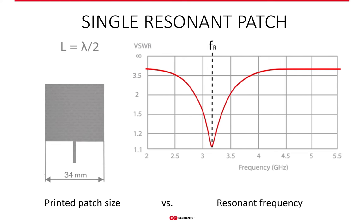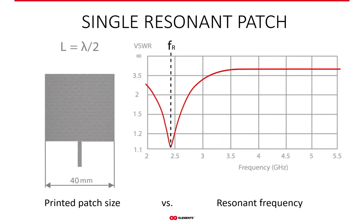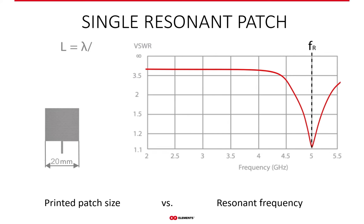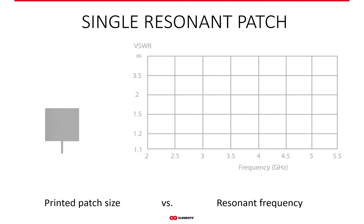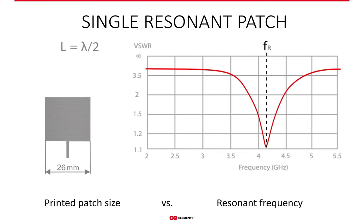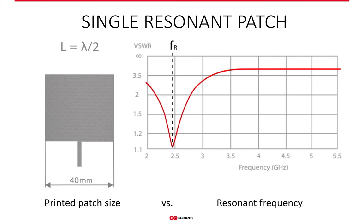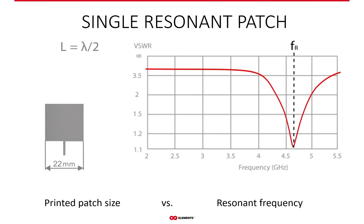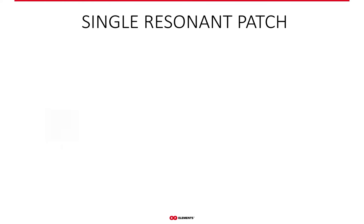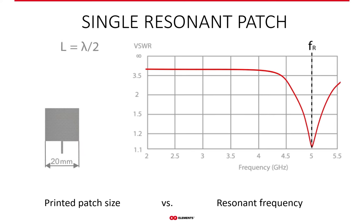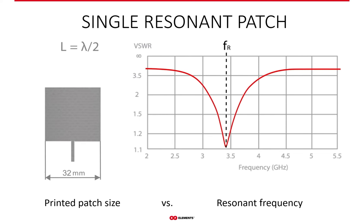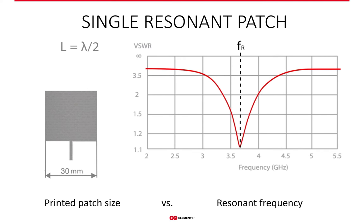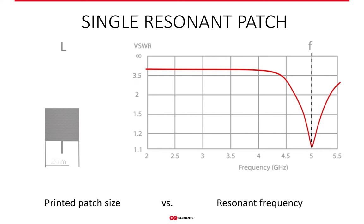The resonant frequency is inversely proportional to the size of the patch: as we increase the size, the resonant frequency decreases, and vice versa. The graph shows where the resonant frequency fr is located, and the VSWR — voltage standing wave ratio — tells us how much of the input signal is reflected from the antenna connector. The smaller the VSWR, the less signal is reflected and more is radiated. The resonant frequency appears as a dip in the VSWR graph, as shown in the animation.